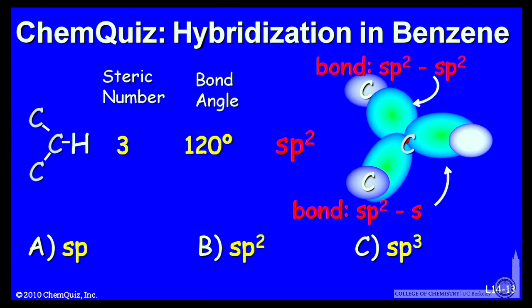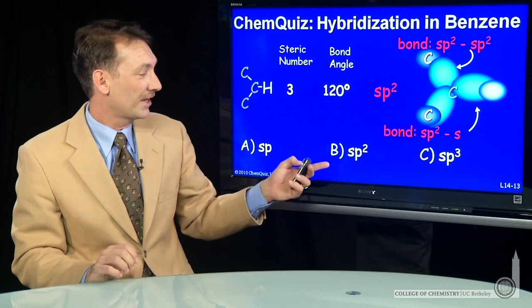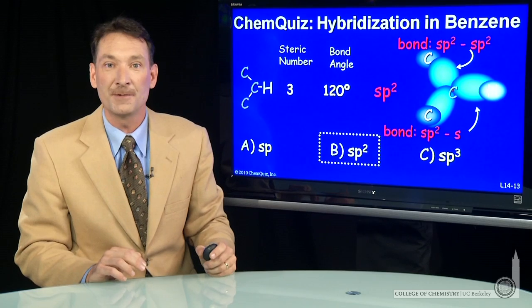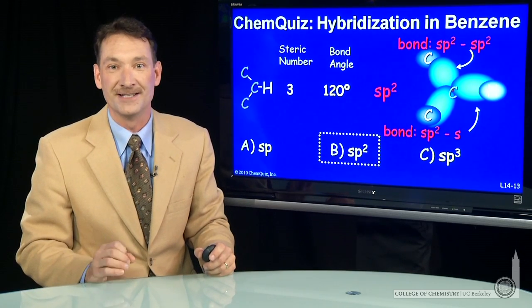So you'll expect to form molecular orbitals from sp2 and sp2 atomic orbitals on each carbon. For the hydrogen, you might expect to have an sp2 hybrid orbital on the carbon and an s orbital on the hydrogen. So the correct answer here, sp2 hybridization for the carbons in benzene.